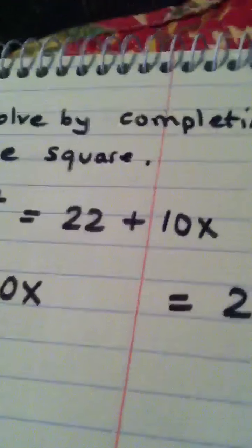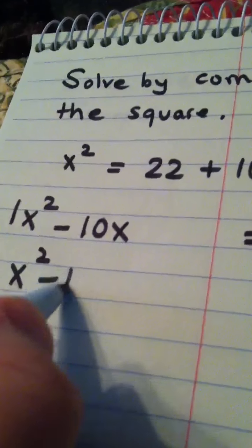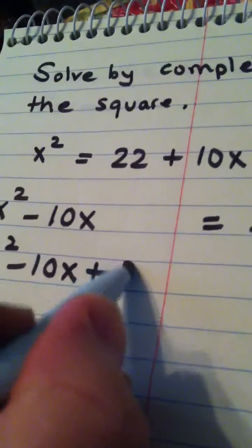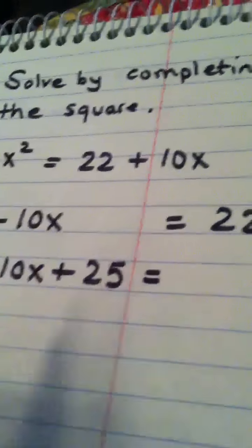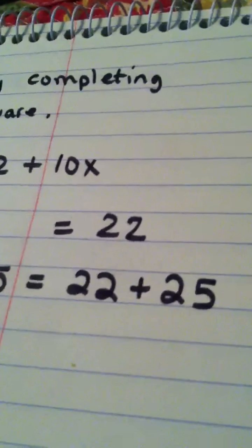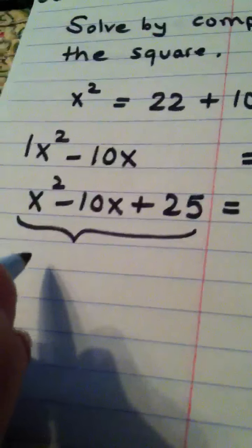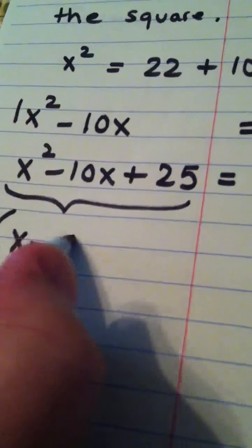And what I do with that 25 is I add it to both sides of this equation, so I have x squared minus 10x plus 25 is equal to 22 plus 25. This side of the equation factors actually as